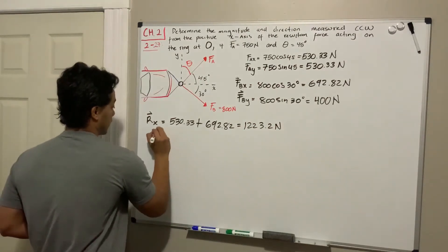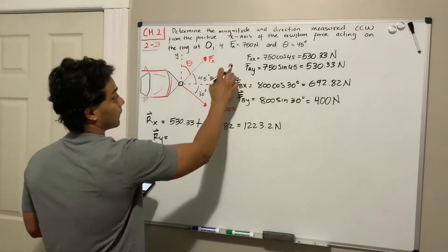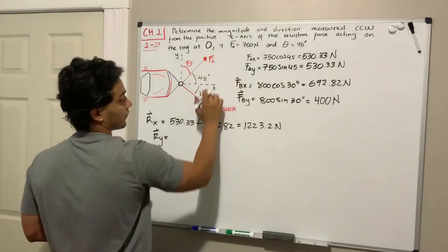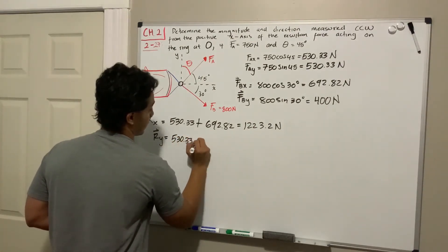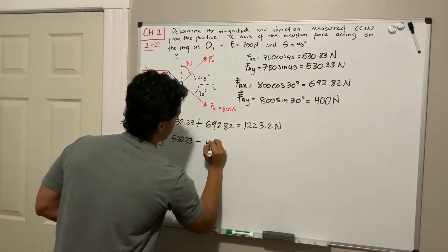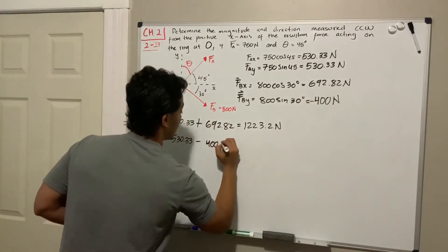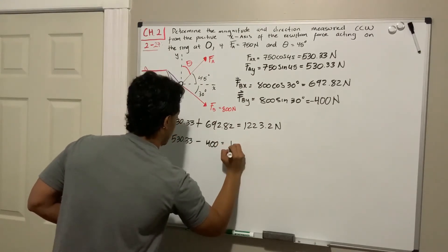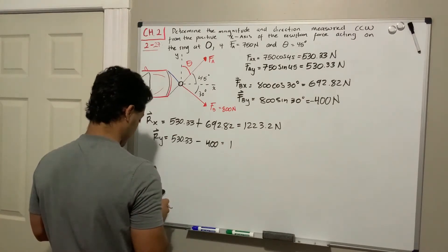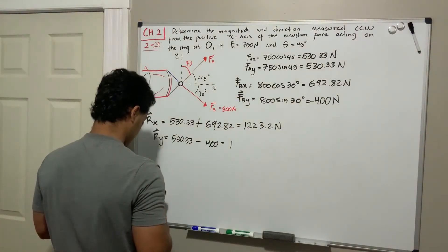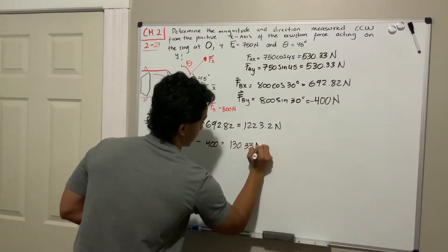Let's do the resultant in the y-direction. That's equal to the y that is going up for F_A, which is 530.33, minus the 400 because they're going down, so this is actually a negative number. This is equal to 130.33 N.